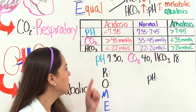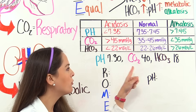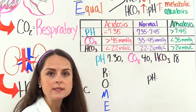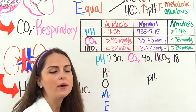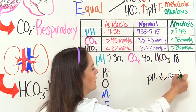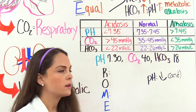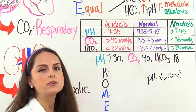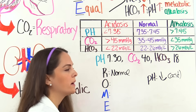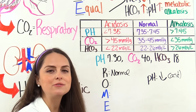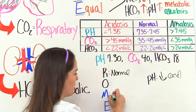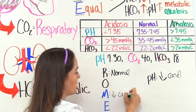Our next problem: blood pH is 7.30, carbon dioxide level is 40, and bicarb level is 18. Blood pH normal is 7.35 to 7.45. We're at 7.30, so we're on the low side — the acid side. Our respiratory system, represented with carbon dioxide, is 40. Normal level is 35 to 45, so we're actually normal here. Our bicarb is 18. Normal is 22 to 26, so we're on the low side for bicarb — the metabolic system — and that's on the acidotic side.